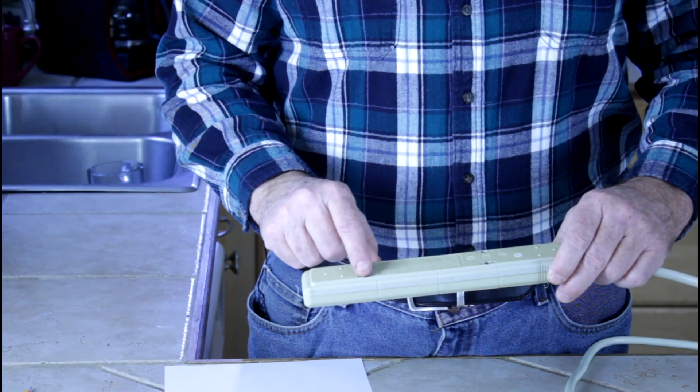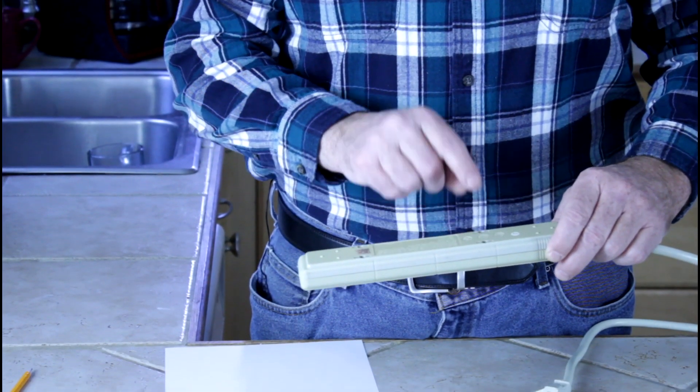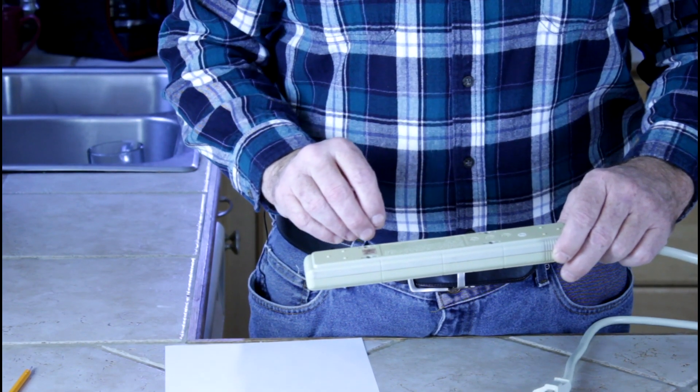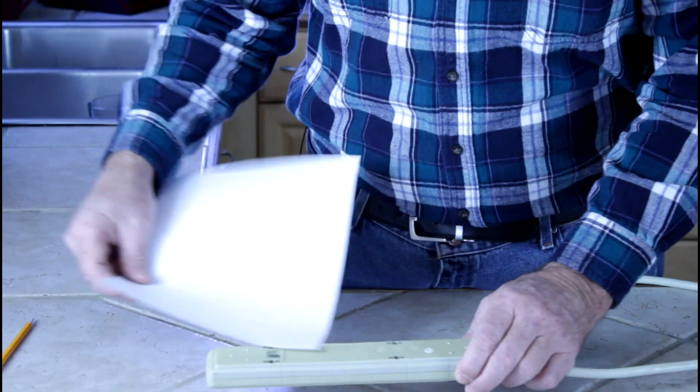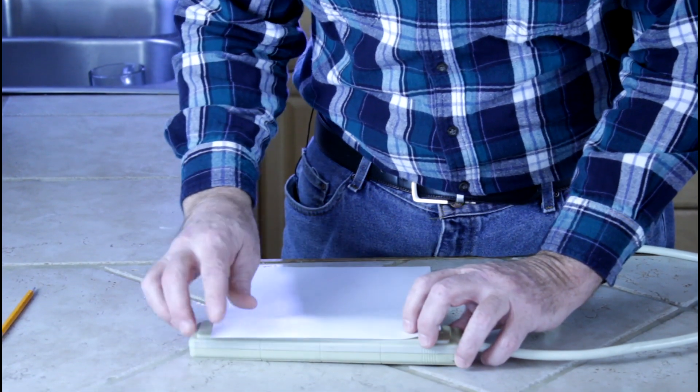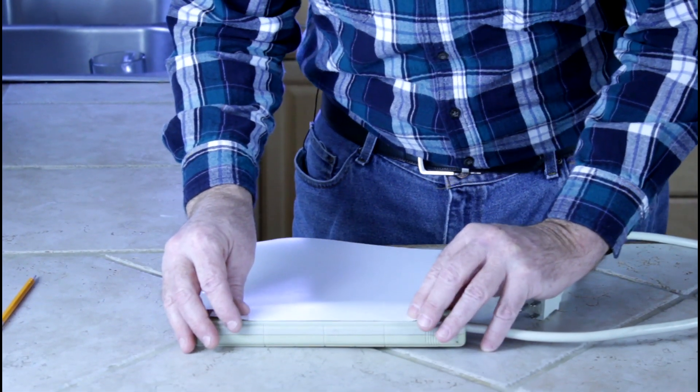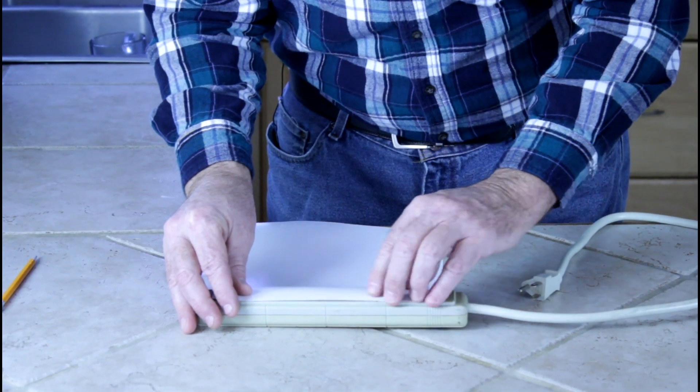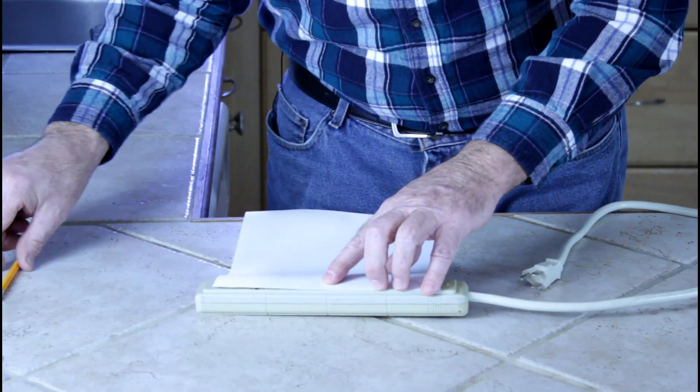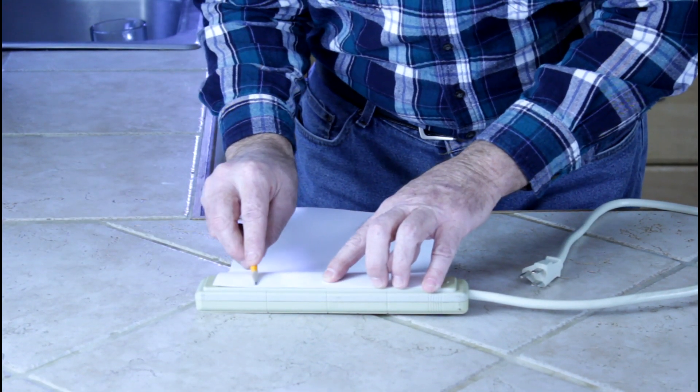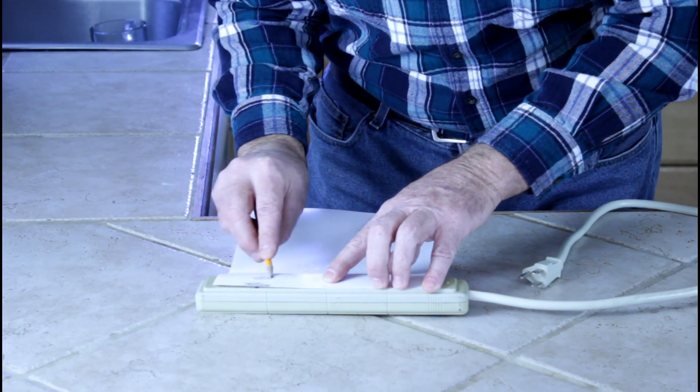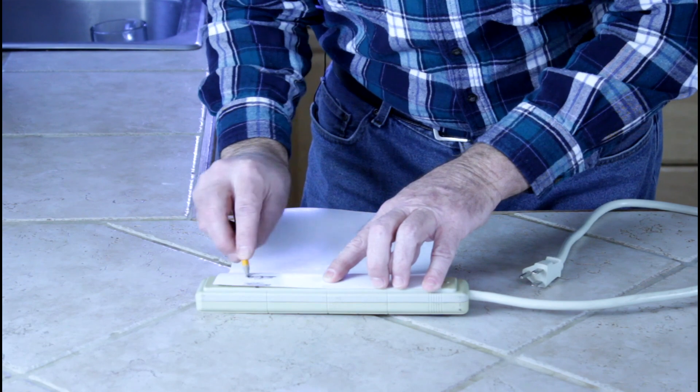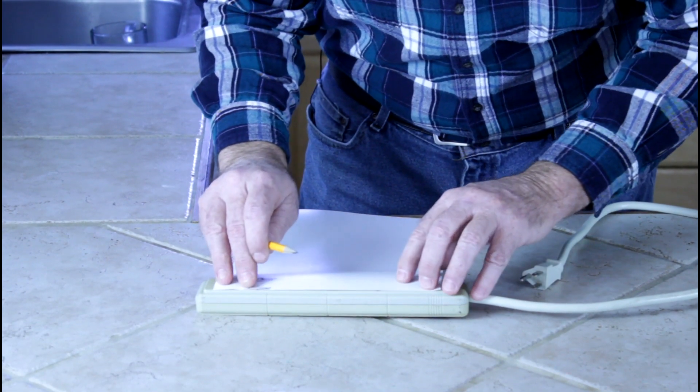Well, if it doesn't come with a template, that is very hard to find exactly where those screws are supposed to go. So let me show you how we do it. We make our own template. You simply take your piece of paper and a pencil, and we are going to put some lead smeared on the back of the paper, just like that.